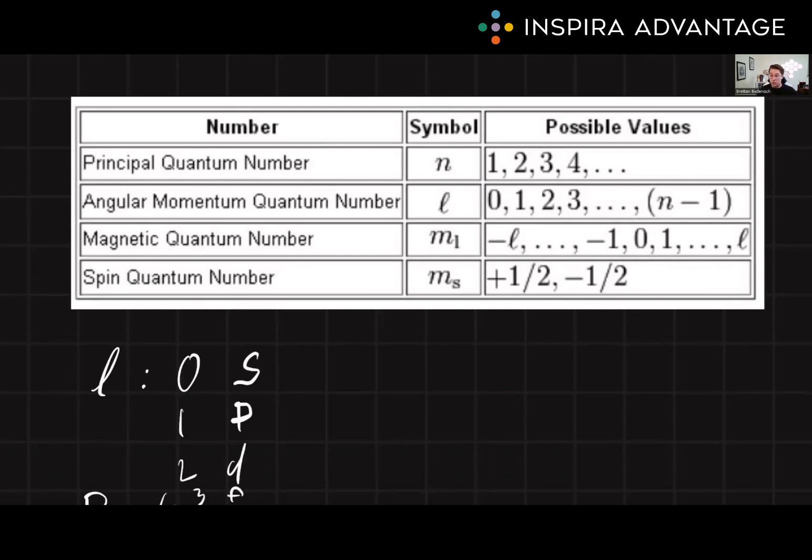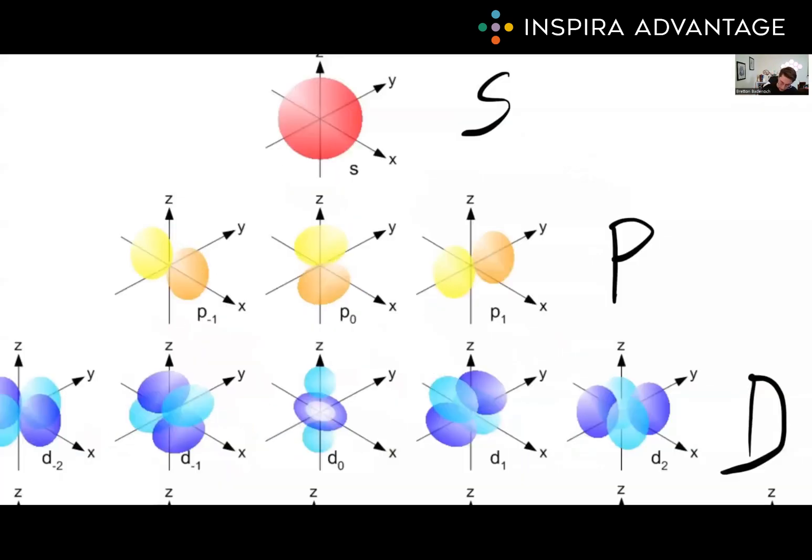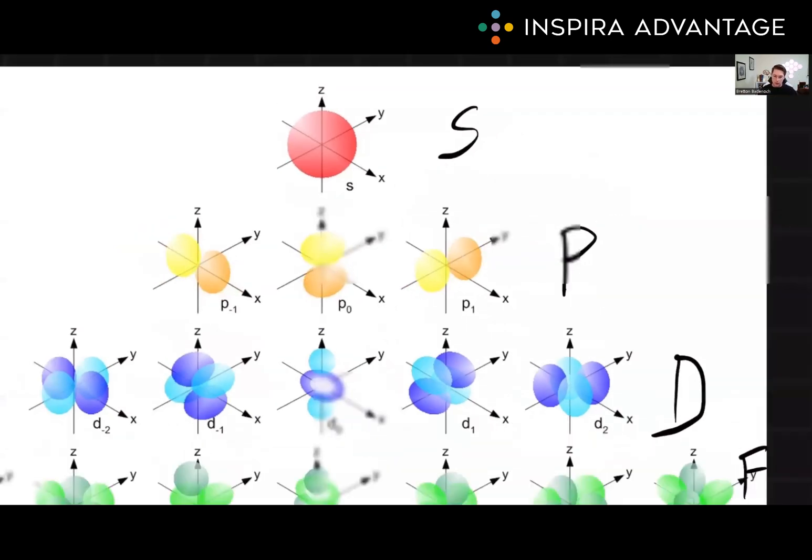Next up, we have the magnetic quantum number, or m. This is describing the orientation of orbital in space. This can range anywhere from negative L to plus L, and include zero. For example, if L equals one, so P orbital, m can be negative one, zero, or plus one, corresponding to the three different orientations. Those three different orientations being on the x-plane, z-plane, or the y-plane. So this is how it's all connected.